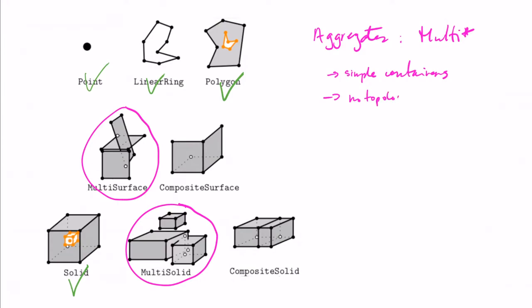So if we have, for example, a multi-solid, it means that in the case here that we have at the bottom, we have three solids, and these solids have no topological relationships that are prescribed. So it means that they can overlap or be disjoint, it doesn't matter. So if we have different solids, we can simply put them into a multi-solid. Same idea can be applied for a multi-surface.